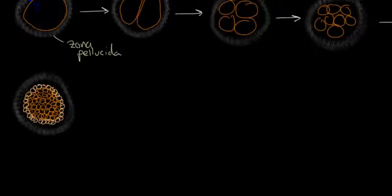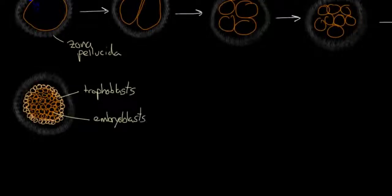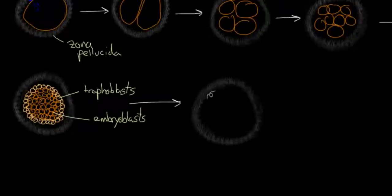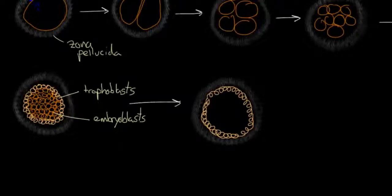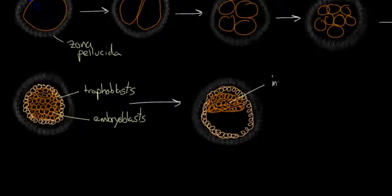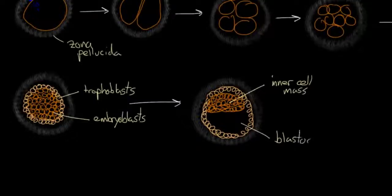So here we have two separate populations of cells. The ones on the outside we'll call trophoblasts, and this mass of cells on the inside we'll call embryoblasts. As we continue, the trophoblasts line the outside, and more interesting things happen to the cells in the middle — they clump even more, clustering at one end and leaving a little cavity on the other end. Some people call that cluster the inner cell mass, and the cavity it leaves is called a blastocele.